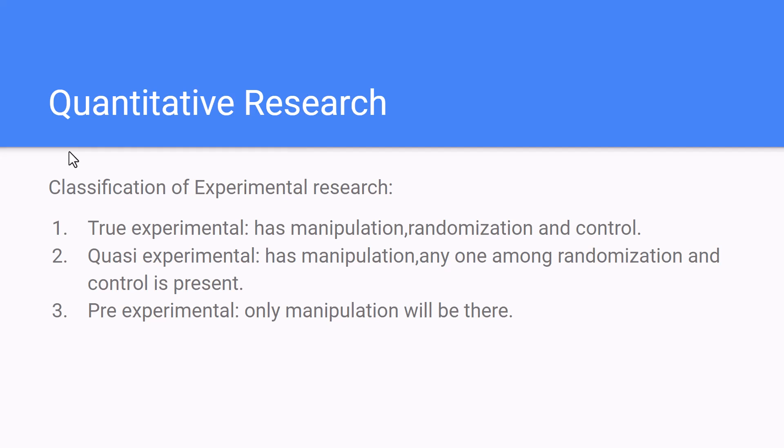Experimental research is categorized into true experimental, quasi-experimental, and pre-experimental. True experimental has three elements: manipulation, randomization, and control. Quasi-experimental has manipulation plus either randomization or control — not both. Pre-experimental has only manipulation, with no randomization and no control. Further classifications of these sub-types will be covered in another video.